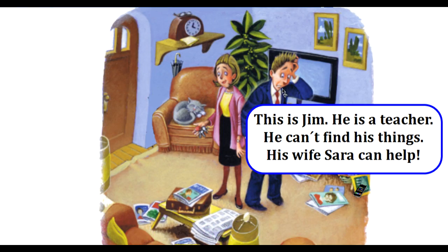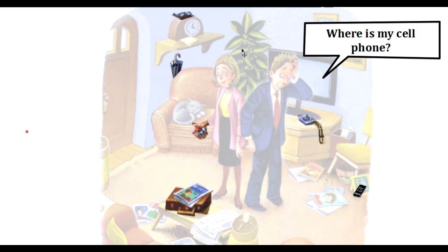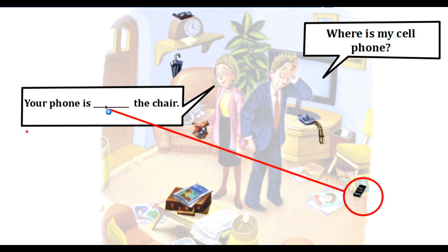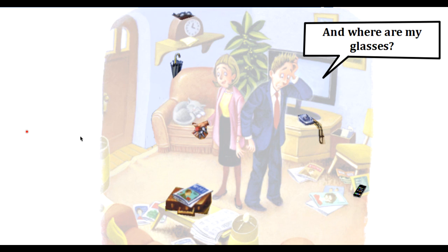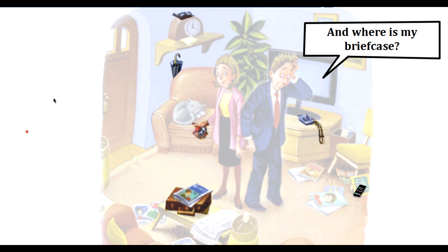This is Jim. He is a teacher and he can't find his things. His wife Sarah can help. Jim: I can't find my things — I need to go to work. Sarah: I can help. Where is my cell phone? Your phone is next to the chair. And where are my glasses? Your glasses are on the clock.